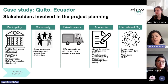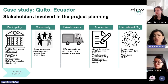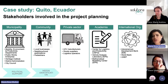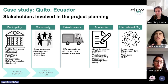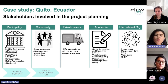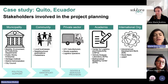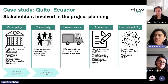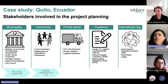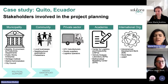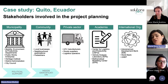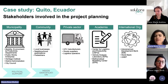The second stakeholder group is the community — specifically local businesses, neighborhood associations, and pedestrians, all directly or indirectly affected by the project. With them, we identified the needs of potential users so that we could plan the project accordingly.